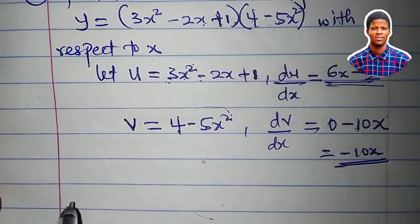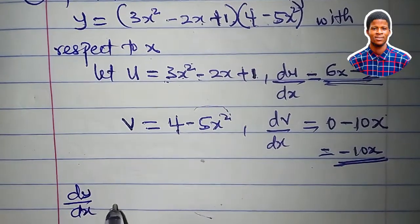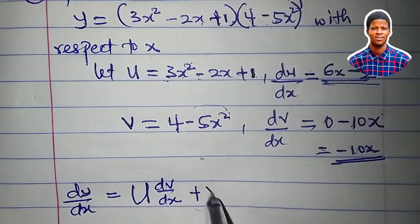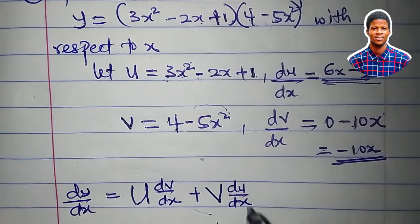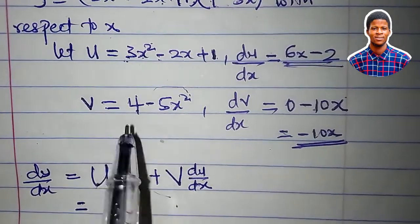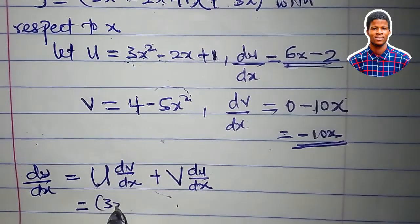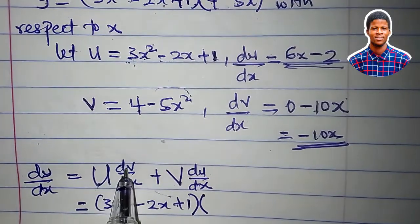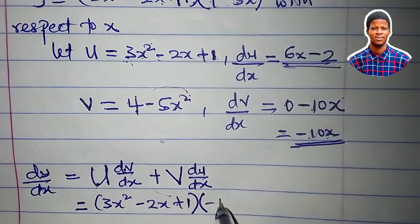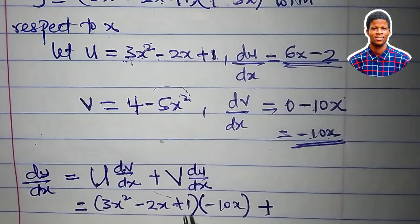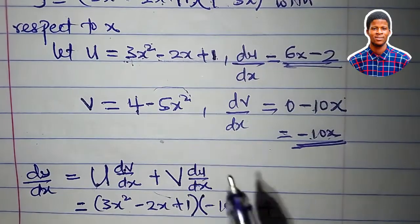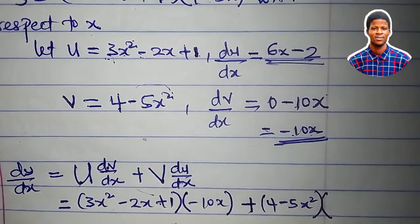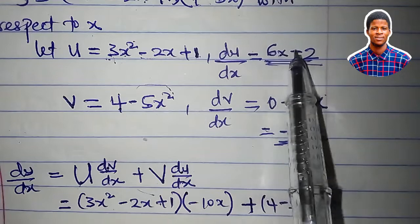The product rule formula says dy/dx is equal to u dv/dx plus v du/dx. u is equal to 3x² minus 2x plus 1 times dv/dx is minus 10x plus v is 4 minus 5x² times du/dx, which is 6x minus 2.